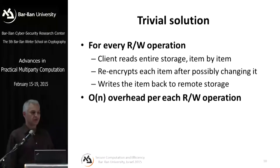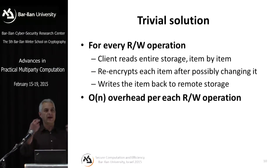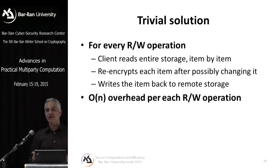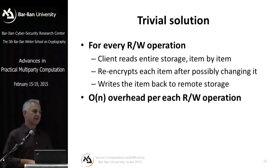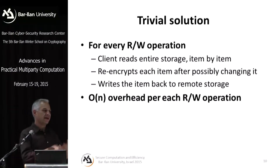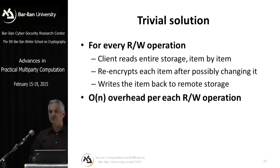There's a trivial solution for achieving oblivious RAM: each time the client wants to read an item, it reads all N items from the server, decrypts each one, re-encrypts it, and sends it back. So every time the client wants to access an item, it has to physically access N items at the server — the blowup is a factor of N, which is obviously inefficient. We'd like to achieve a much better blowup. The best techniques achieve a blowup of only a log N factor with very small constants.